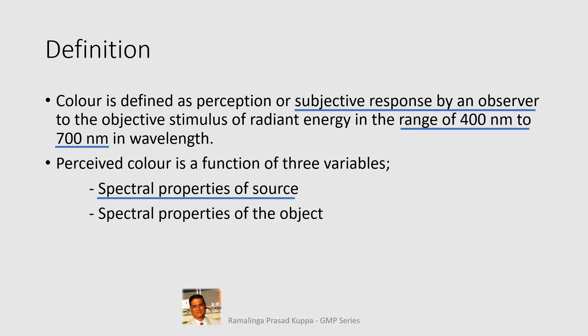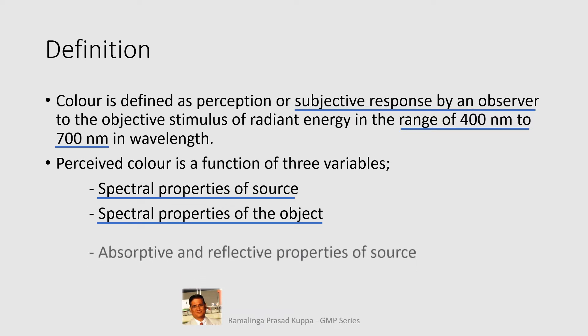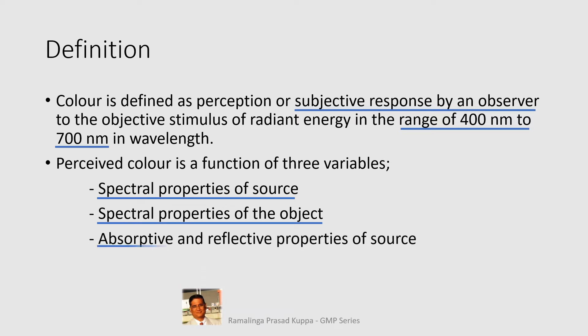Second, the spectral properties of the object — how the object on which the light is falling reflects that light also plays a role in color perception. Third, the absorptive and reflective properties of the source — these characteristics also play an important role in color perception.